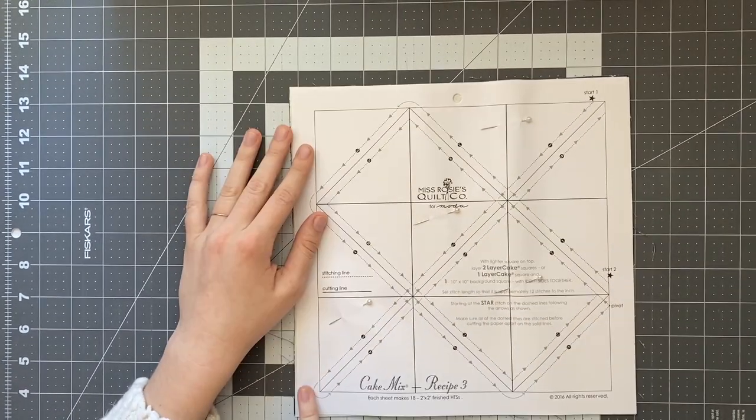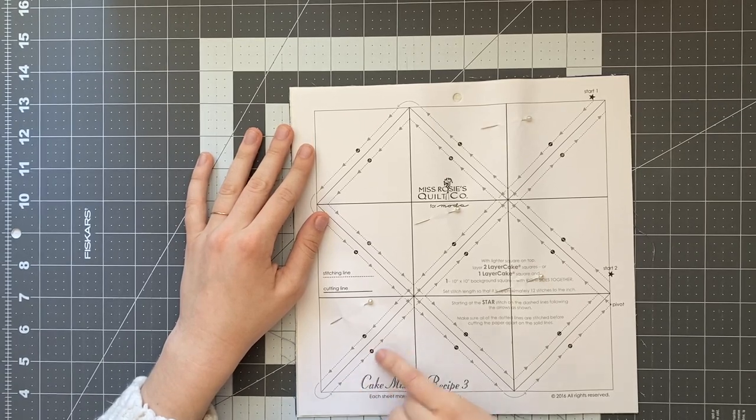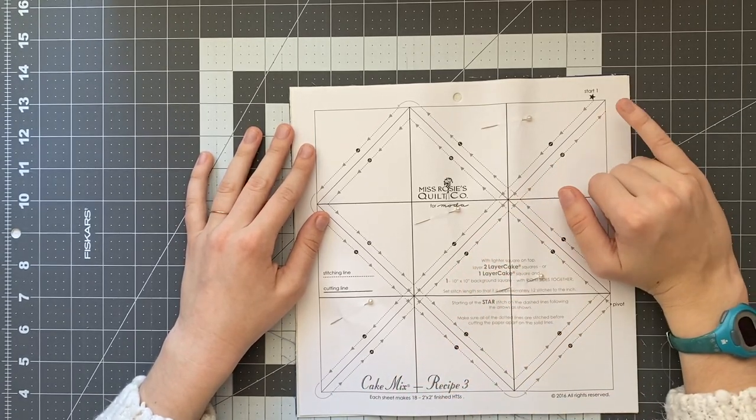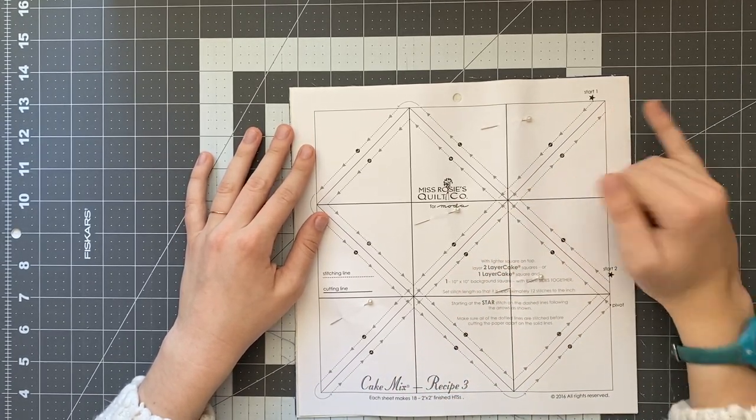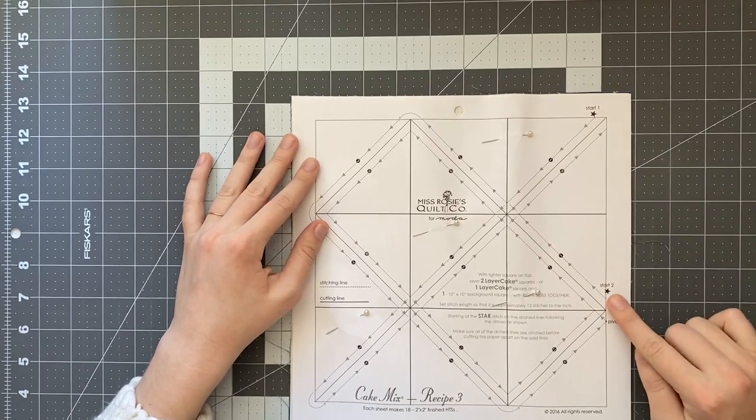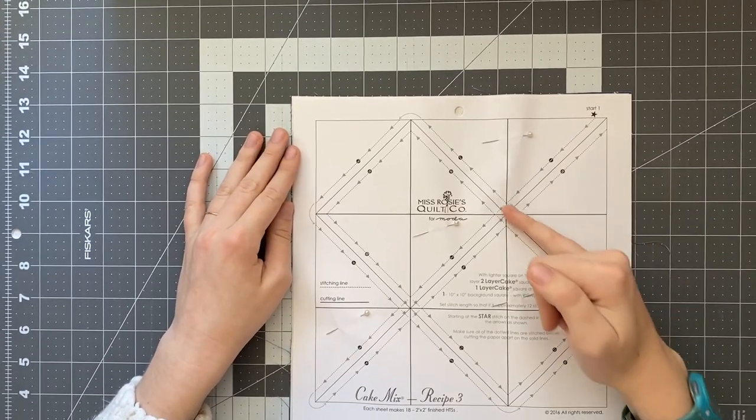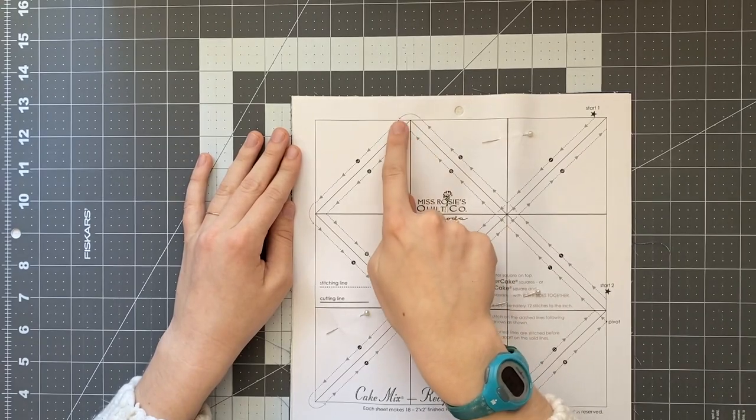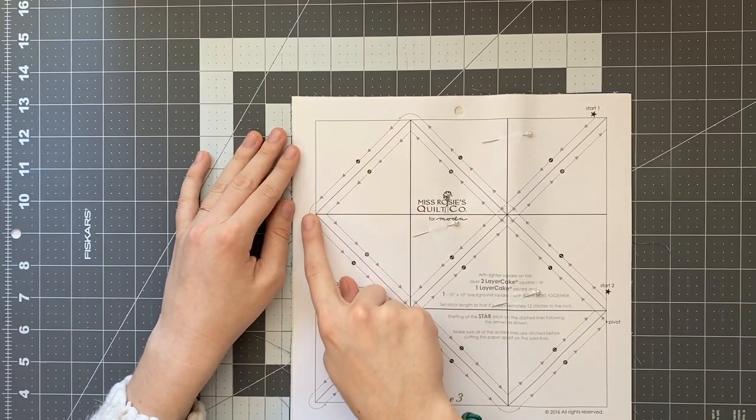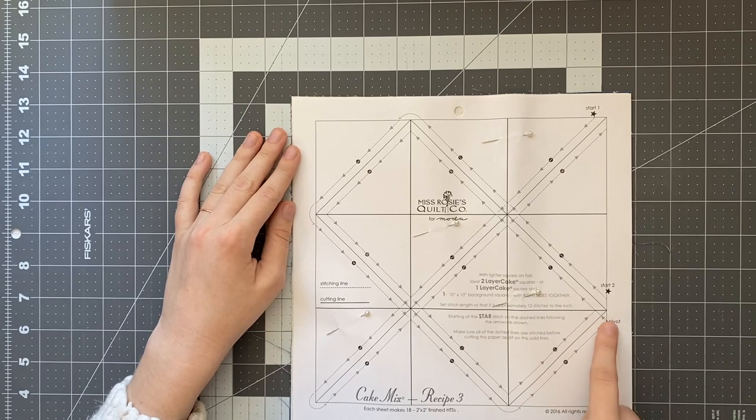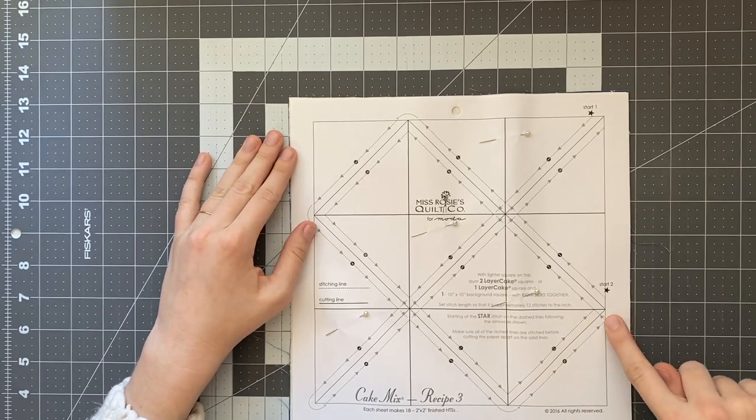and then I'm gonna cut my thread right here and then we have a second star it says start two and we're gonna just keep following these lines pivot at the arrow pivot so across here pivot and then right here it also says pivot and then we're just going to complete it right here okay so it's pretty self explanatory